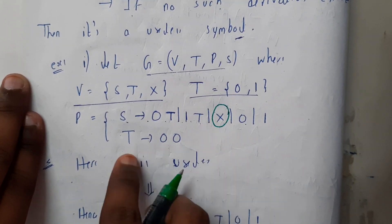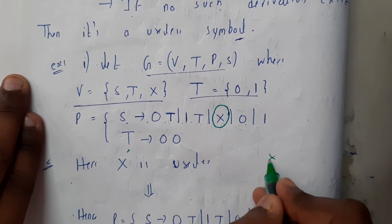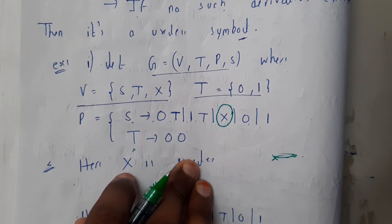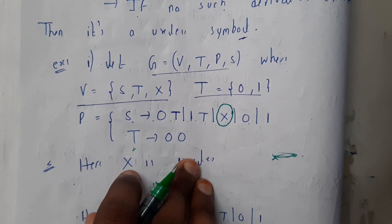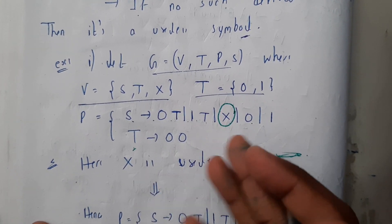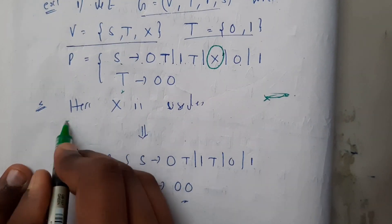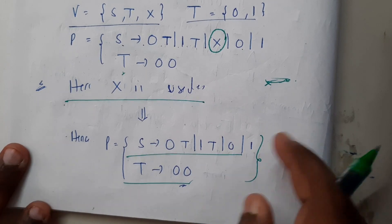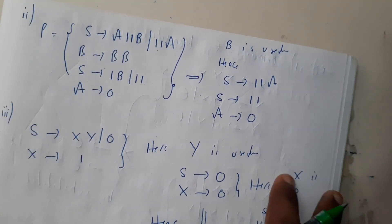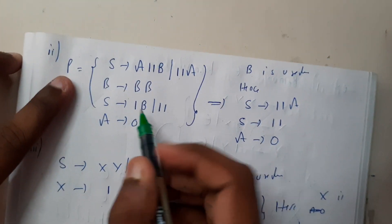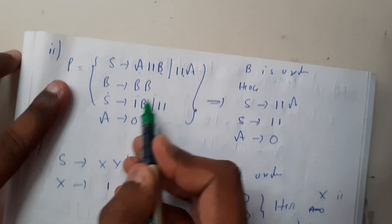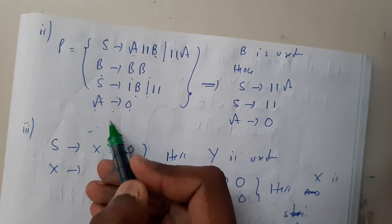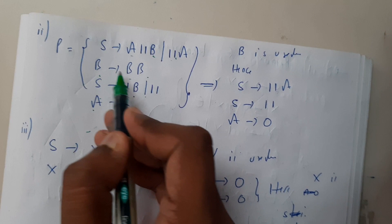Is there any production with respect to X — does X tend to anything? No. So there is no use of X; we simply remove it and get our new grammar. Let us take one more example. Observe: S tends to AB, B tends to BB, S tends to 1B, and A tends to 0.